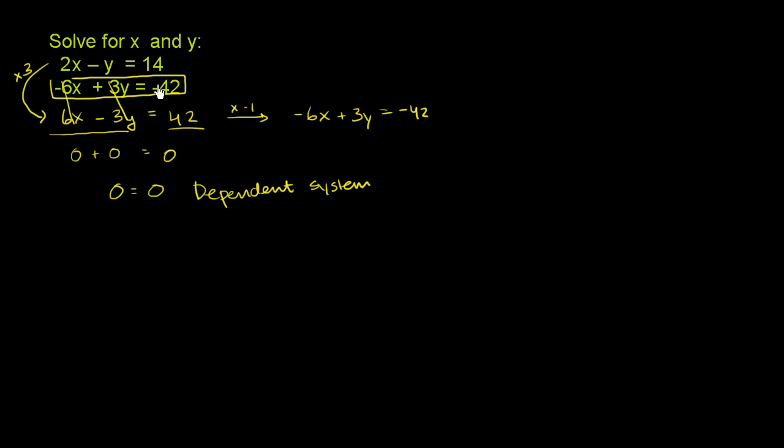Or another way to think about it, if you want to go from the first equation to the second equation, you just multiply both sides of the equation times negative 3. So both of these constraints are actually the same constraints. They're just kind of a scaled-up multiple of each other.